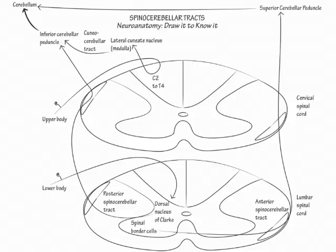For our last pathway, first label lamina 7 intermediate zone cervical neurons. Then draw the rostral spinocerebellar tract along the anterior wall of the cord. Just as the cuneocerebellar tract is the upper body equivalent of the posterior spinocerebellar pathway, the rostral spinocerebellar tract is the upper body equivalent of the anterior spinocerebellar pathway.